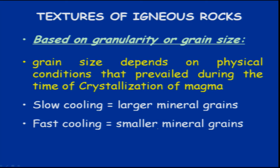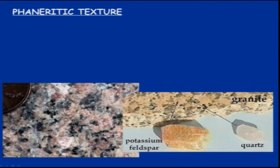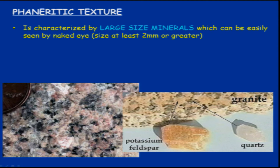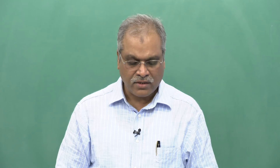Finer grains are related to extrusive rocks and coarser grains to intrusive rocks. For phaneritic texture, we see coarser crystals characterized by larger-size minerals which can be easily seen by the naked eye. Size is at least 2 mm or greater and is commonly associated with intrusive, also termed as plutonic, igneous rocks — because magma in the crust cools at a slower rate and has enough time to form larger crystals. Examples include granite and pegmatite.